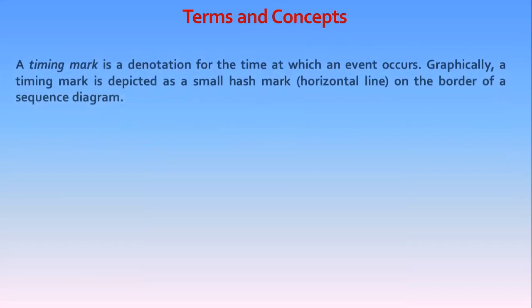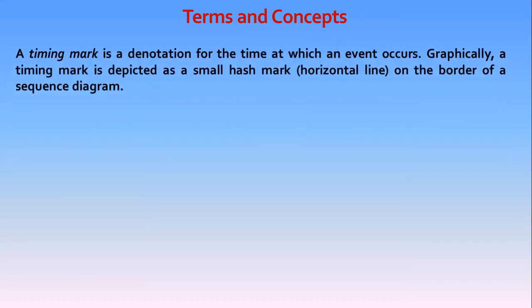Coming to terms and concepts, a timing mark is a denotation for the time at which an event occurs. Graphically, a timing mark is depicted as a small hash mark, a horizontal line on the border of a sequence diagram.